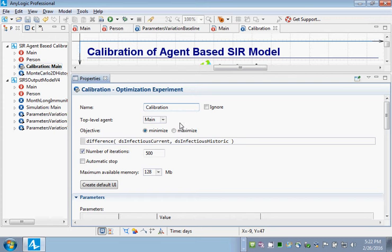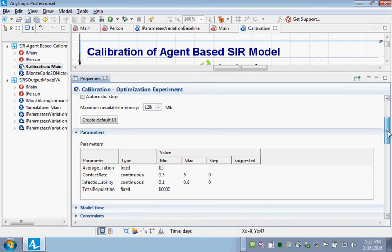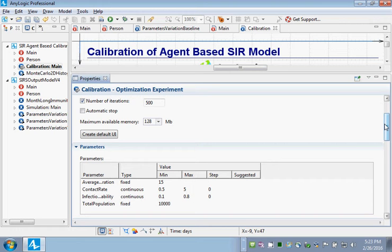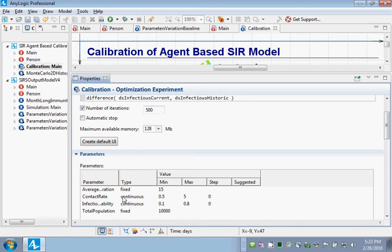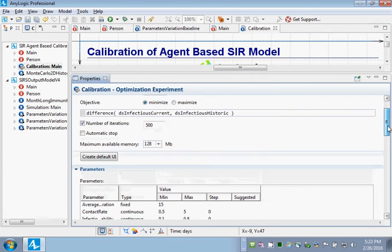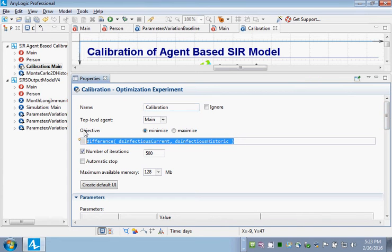So here we have a situation where the experiment runs main class many, many times. And for each time it runs the main class, it's going to run it many times. And as it runs it, it's going to vary values of parameters as specified here within certain ranges. Some of them are fixed, some of them are varying.